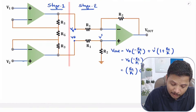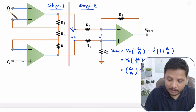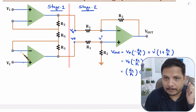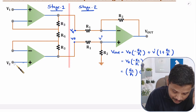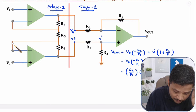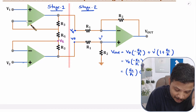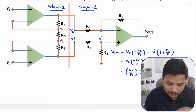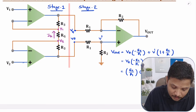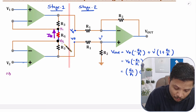Now we need to find VB minus VA in terms of V2 and V1, so let us analyze Stage 1. In Stage 1 there is negative feedback. With negative feedback, the virtual short concept applies: voltages at the inverting and non-inverting terminals will be equal. The non-inverting input is at V2, so the inverting terminal of that op-amp is also at V2. Similarly, the other op-amp has V1 at its non-inverting input, so its inverting terminal is also at V1. The current IG through resistor RG is therefore (V2 − V1) / RG.